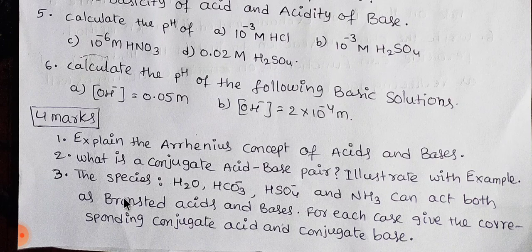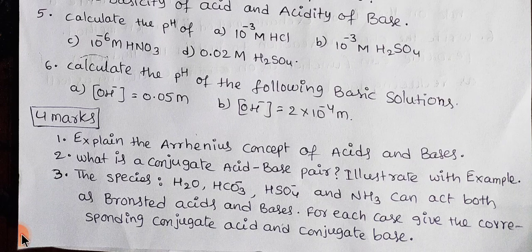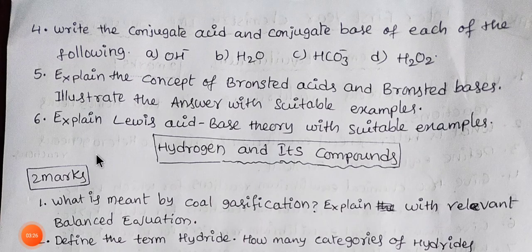Arrhenius concept and acid-base theory, and what is a conjugate acid-base pair — illustrate with example. H2O, HCO3⁻, HSO4⁻, and NH3 — identify both Bronsted acid and base for each case, give the corresponding conjugate acids and conjugate bases. We have four species — conjugate acid and conjugate base. To get the conjugate acid, add H⁺; to get the conjugate base, remove H⁺. It is easy to answer.